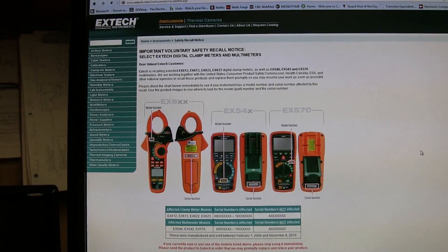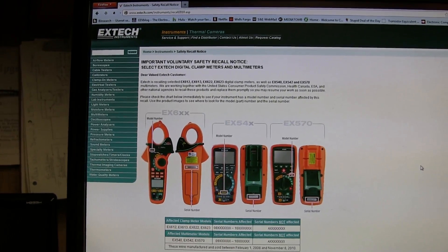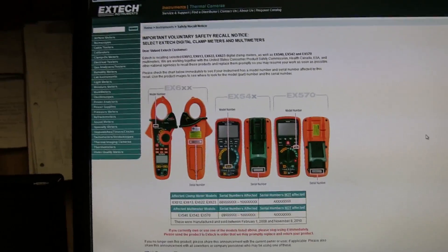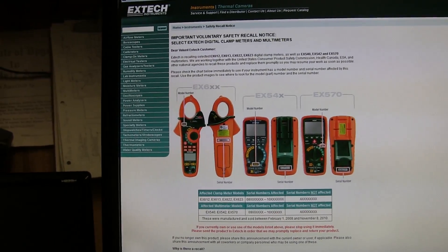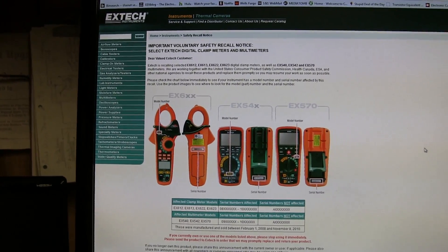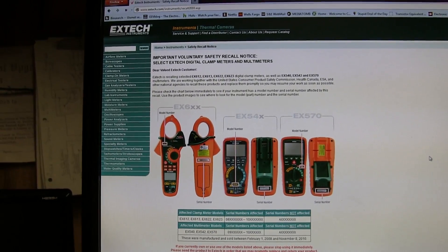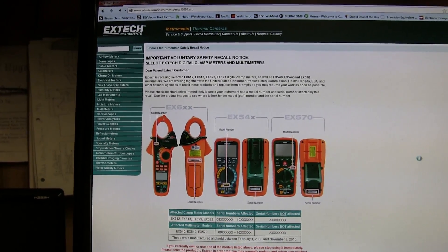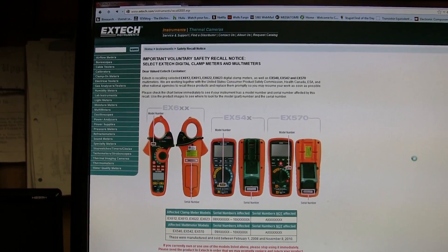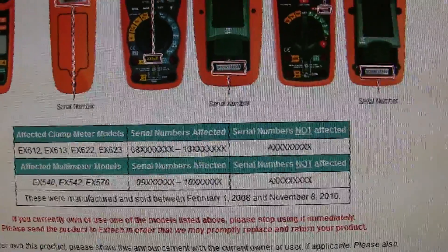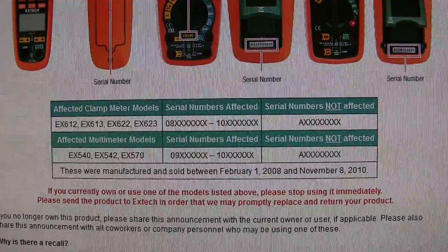So I thought, hey, that's pretty cool. But I just want to let you guys know that if you have any of these meters and you maybe you're like me that lived under a rock and didn't check the page to see if your meter was recalled, you might want to take a look. As you can see their clamp meters, that's a 600 series, the 612, 613, 622, 623 and then the 500 series, the 540, the 542 and the 570 with those serial numbers. I'm going to zoom in on those. You can call them up and they'll replace your meter for free. They'll even pay for the shipping.